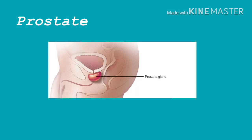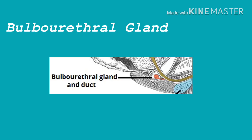The prostate gland is a firm, dense structure located just inferior to the urinary bladder. It is about the size of a walnut and circles the urethra as it leaves the urinary bladder. Numerous short ducts from the substance of the prostate gland empty into the prostatic urethra. The secretions of the prostate are thin, milky colored, and alkaline, and they function to enhance the motility of the sperm.